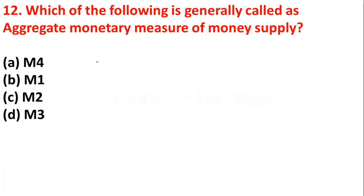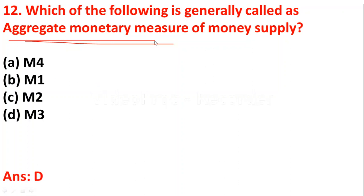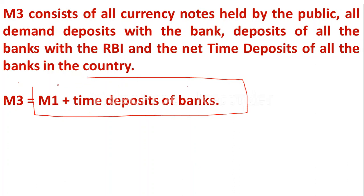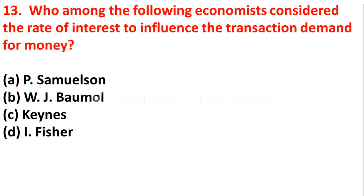The next question: which of the following is generally called the aggregate monetary measure of money supply? Option A: M4, option B: M1, option C: M2, option D: M3. M3 is known as the aggregate monetary measure of money supply. M3 consists of M1 plus time deposits of commercial banks.